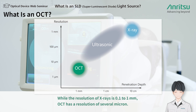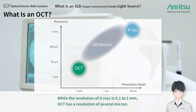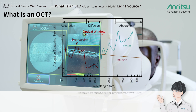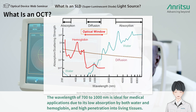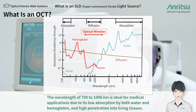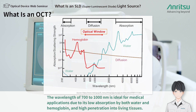While the resolution of X-rays is 0.1 to 1 millimeter, OCT has a resolution of several microns. The wavelength of 700 to 1000 nanometers is ideal for medical applications due to its low absorption by both water and hemoglobin and high penetration into living tissues.